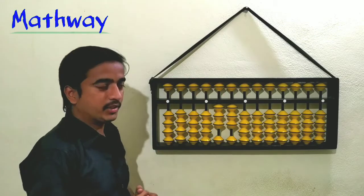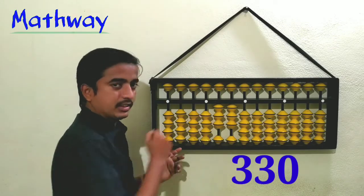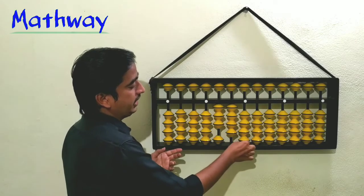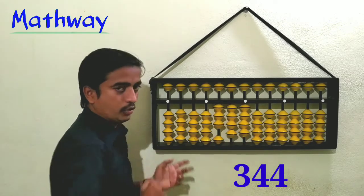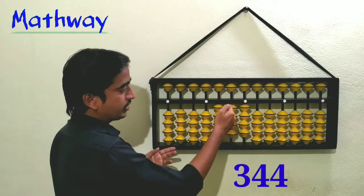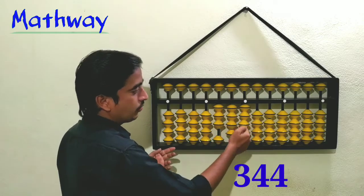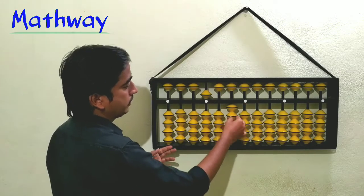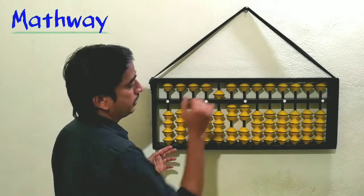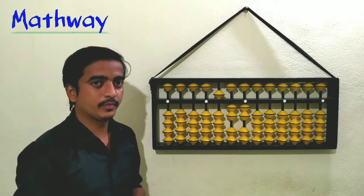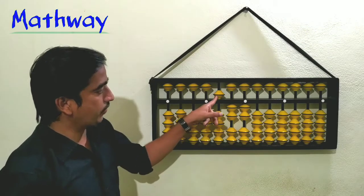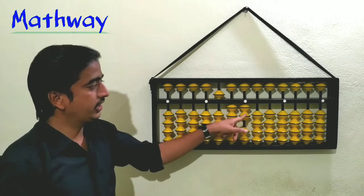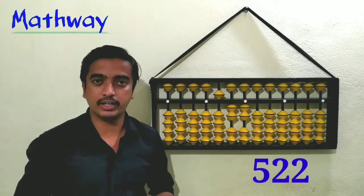Can you guess what this number is? It is 330. Next, 344: three hundred beads, four tens beads, and four ones beads — so it is 344. Can you guess what this number is? In the hundreds place, the five-bead is connected to the answer line, so it is 500, plus two tens and two ones — the number is 522.